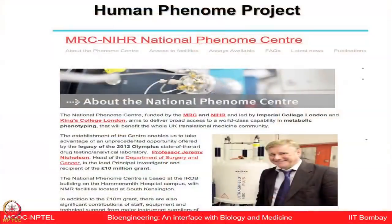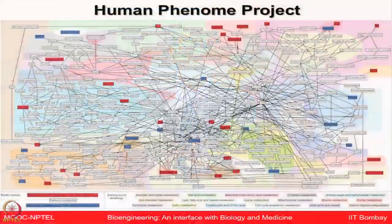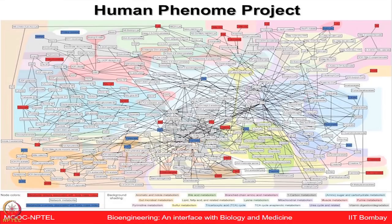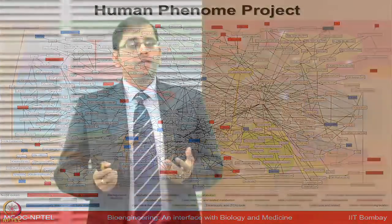Other mega projects aim to look at the maximum molecular changes happening in a given individual and screen similar things in large populations. The Human Phenome Project in London profiles all metabolites in healthy populations and those affected by different diseases, trying to understand metabolic networks perturbed as healthy individuals acquire diseases. The National Phenome Center is providing interesting publications showing how we can understand human physiology and phenotypes using mass spectrometry and NMR-based technologies generating this kind of big data.